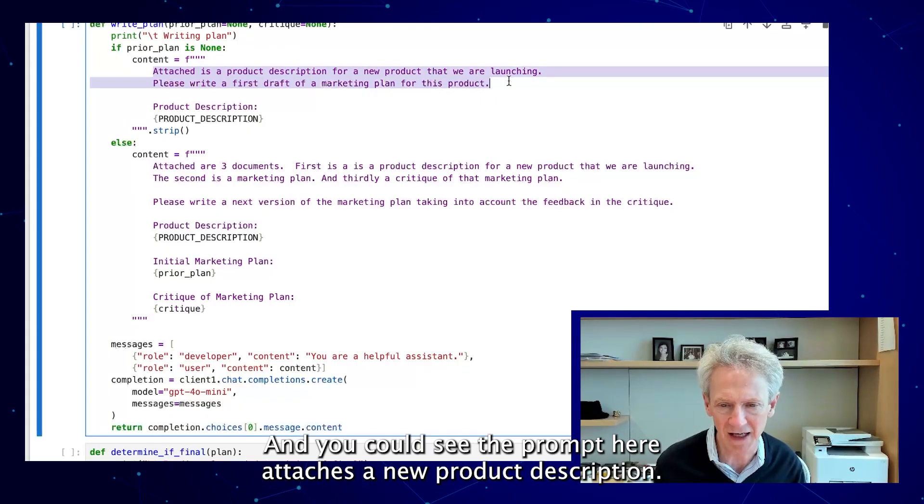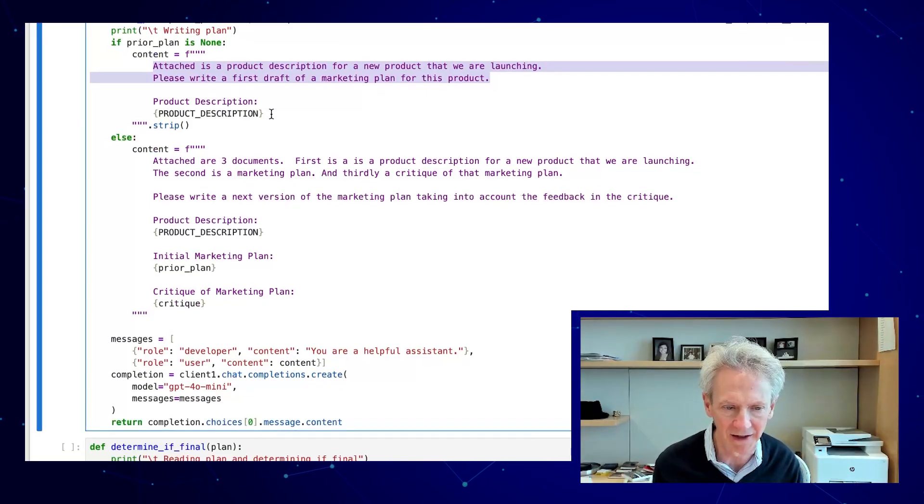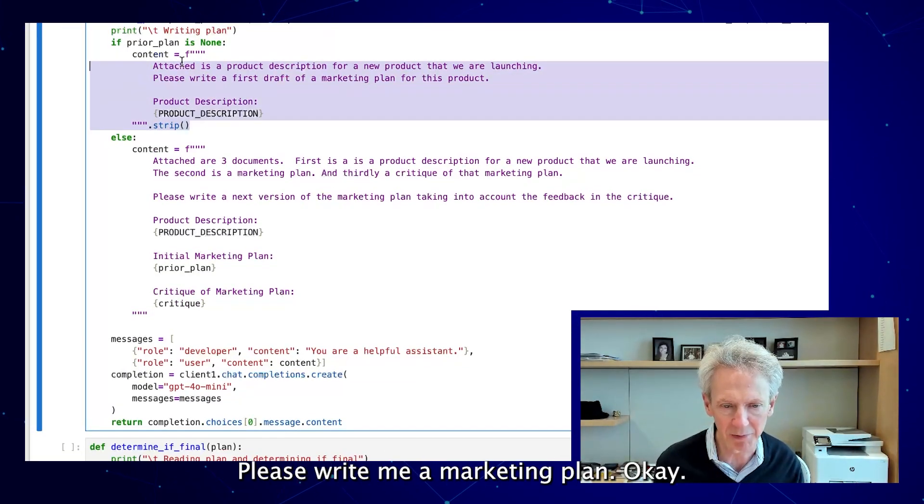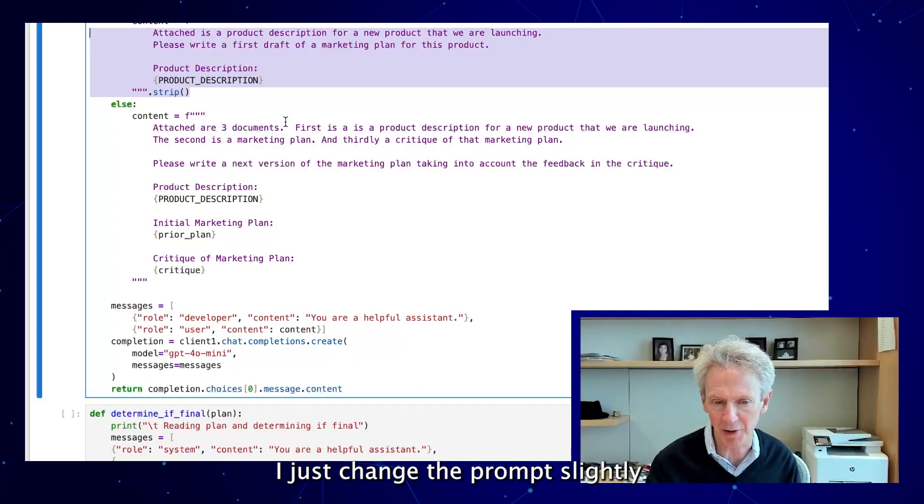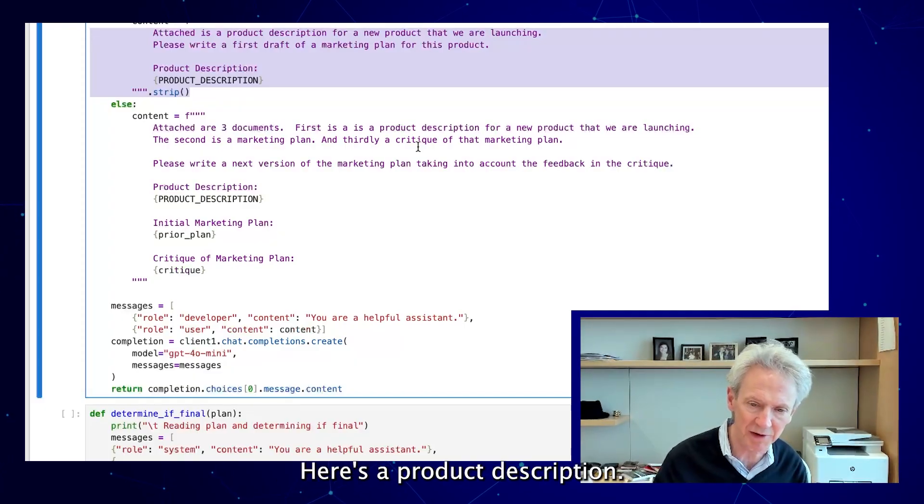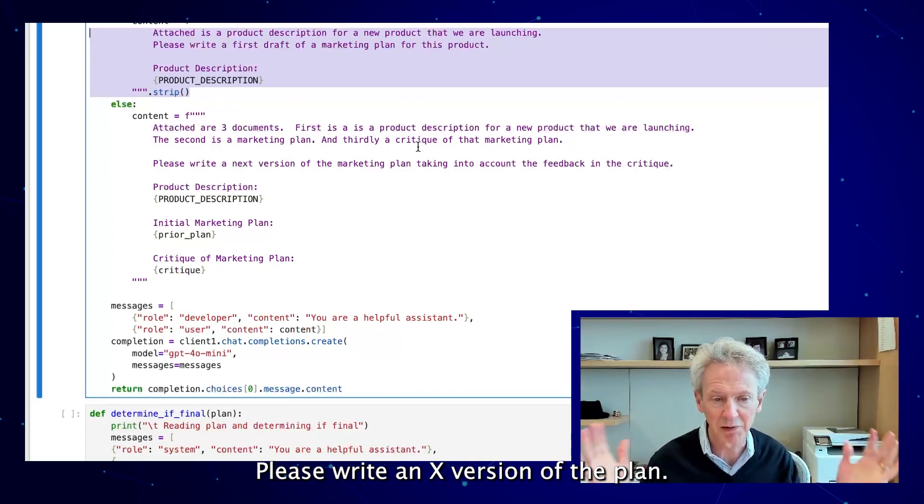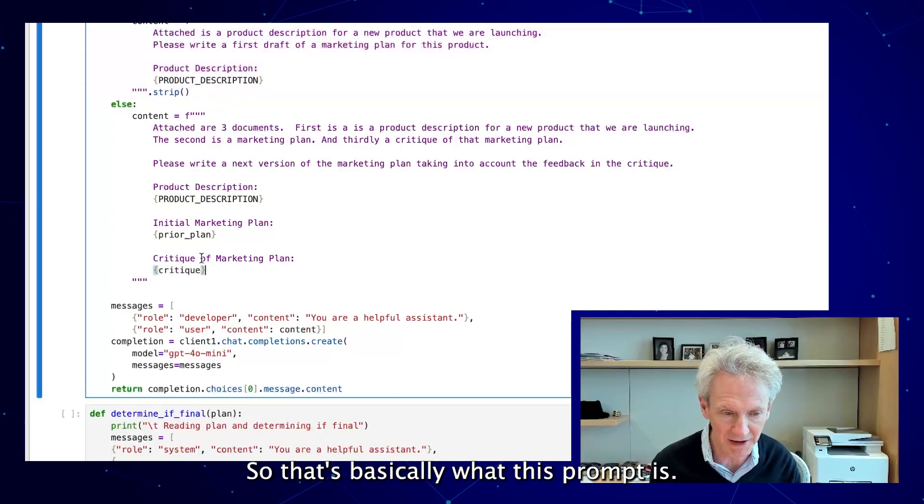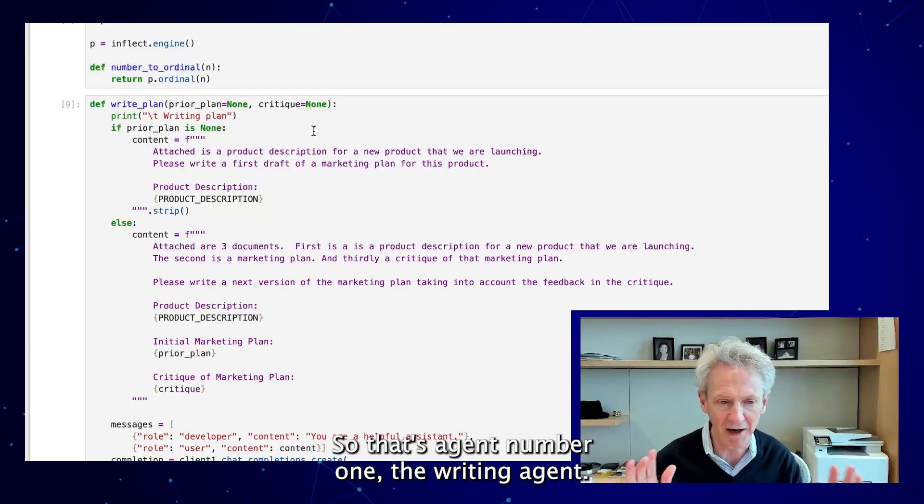And then there are three agents. This is the writing plan agent, and you could see the prompt here attaches a new product description, at least for the first time you write it where there's no prior plan. Here's the product description. And when there is a prior plan, like you're doing a revision, I just change the prompt slightly. Here's a product description, here's the critique, here's the marketing plan that was written, the prior version, here's a critique of that marketing plan. Please write a next version of the plan. So that's basically what this prompt is. That's agent number one, the writing agent.